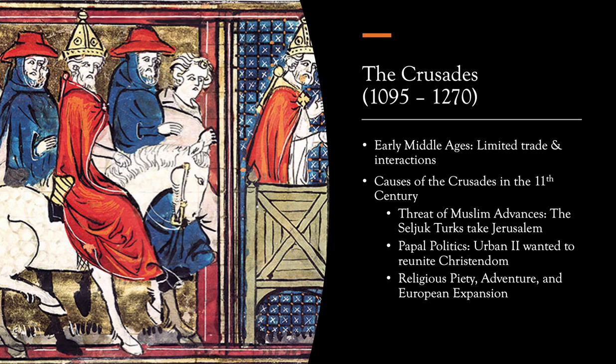Another very important cause of the Crusade is the papal politics taking place. The Pope at the time, Urban II, really wanted to reunite Christendom. Earlier in the century, in 1054, Christianity had officially been split into separate Western and Eastern churches in an event known as the Great Schism — we will talk more about that in our next lecture. This meant that the Byzantine Empire now had their own church, called the Eastern Orthodox Church, while Western Europe was controlled by the Roman Catholic Church. This split was the result of centuries of growing cultural differences, as well as disagreements in doctrine and religious practice.